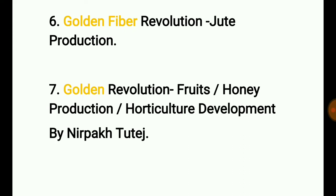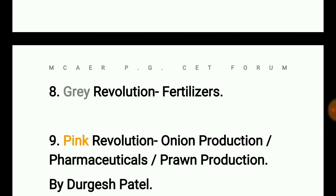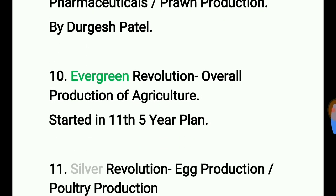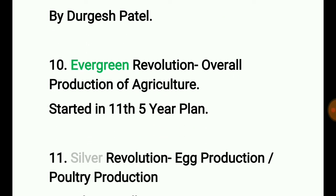The Golden Revolution was coined by Nirpak Tutaj. The eighth revolution is the Gray Revolution, for fertilizer. The ninth is the Pink Revolution, for onion production, pharmaceuticals, and prawn production, coined by Durgesh Patel. The Evergreen Revolution covers overall agricultural production and was started during the 11th Five Year Plan.